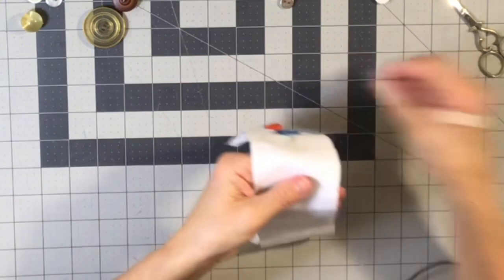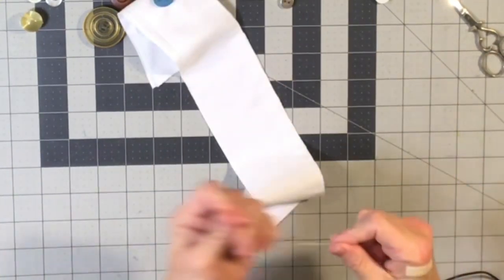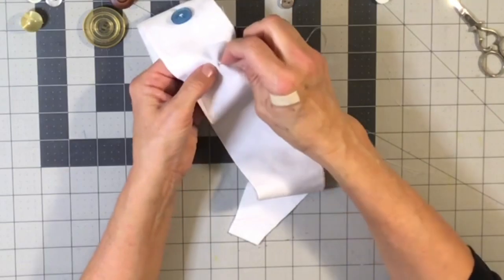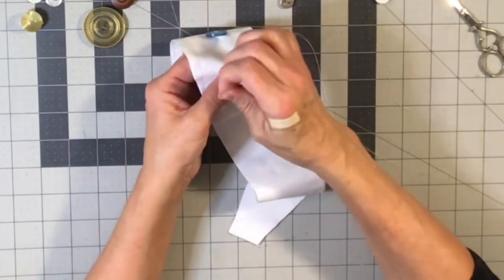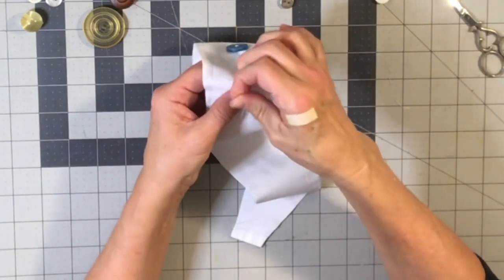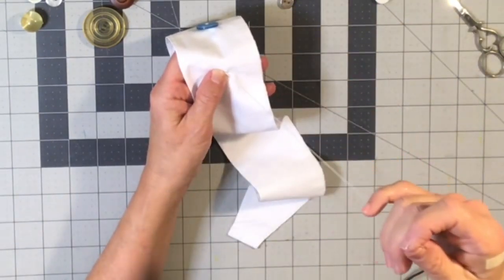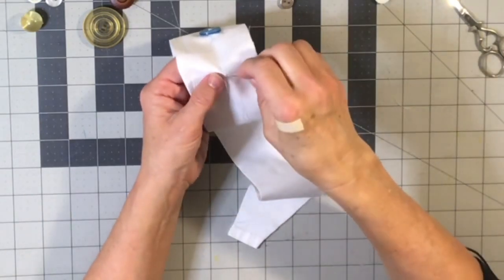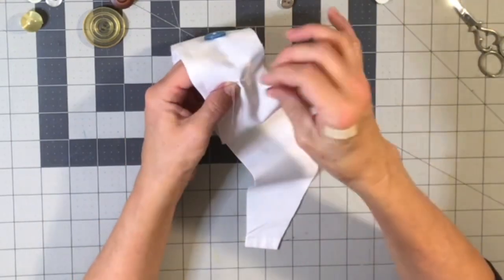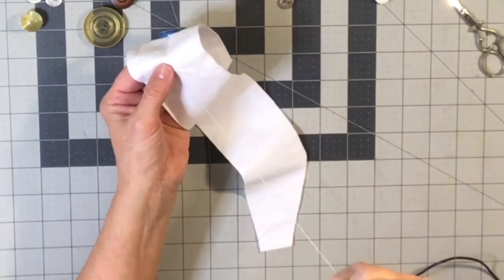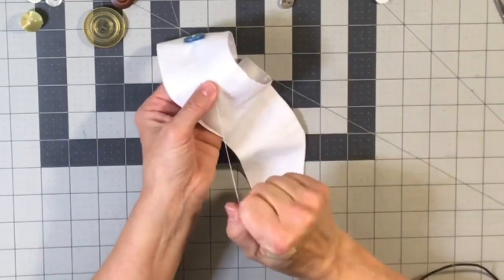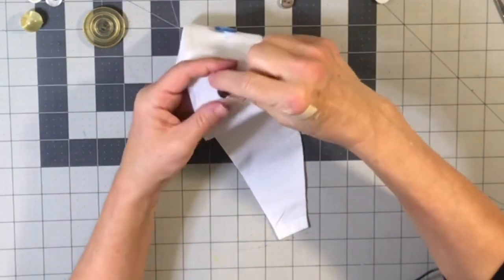Now we're going to do a shank. And to be honest, shanks are a little more difficult for me. Don't know why, but it's not that I can't do it, it's just not as easy for me. So I'm going to put in my three anchor stitches.